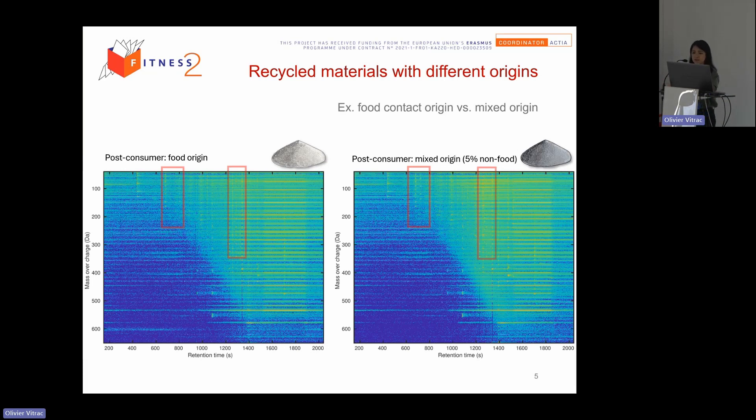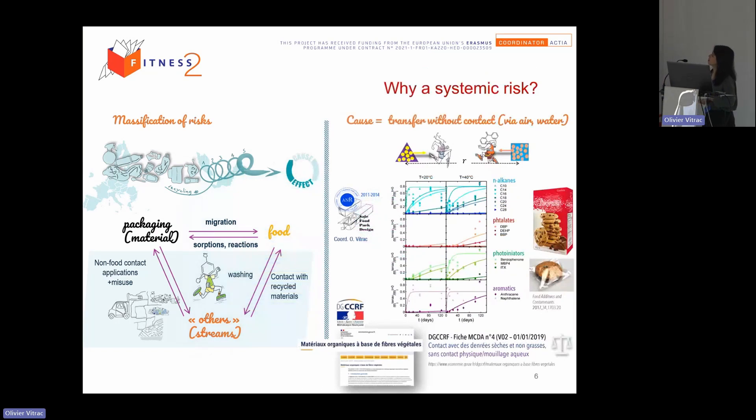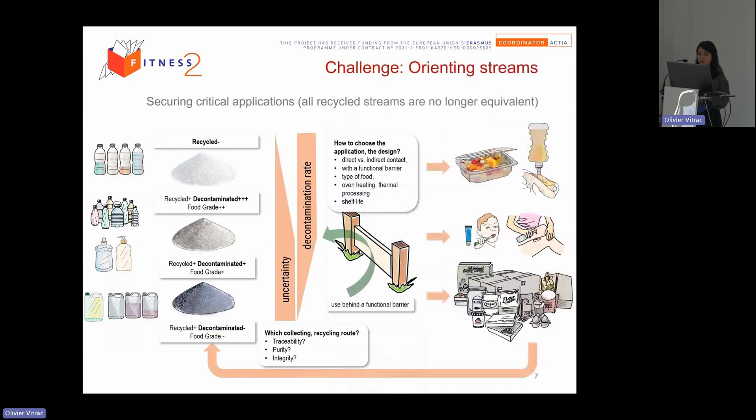So the question is if we have the robust methods and fast and rapid method to say that, okay, this one is a food origin or not to go in the recycling loop. And also you have already seen this slide. It's just to show you the intensification of risk if we use recycling material. So with that we need to deal.